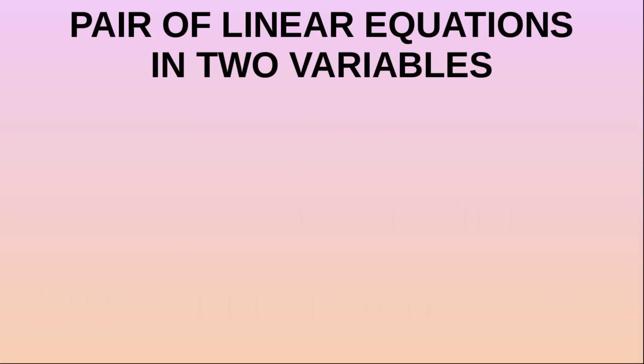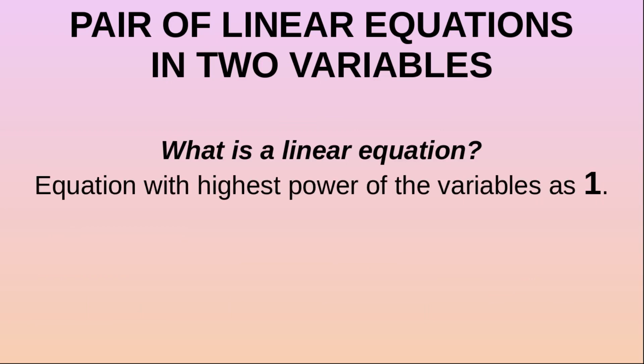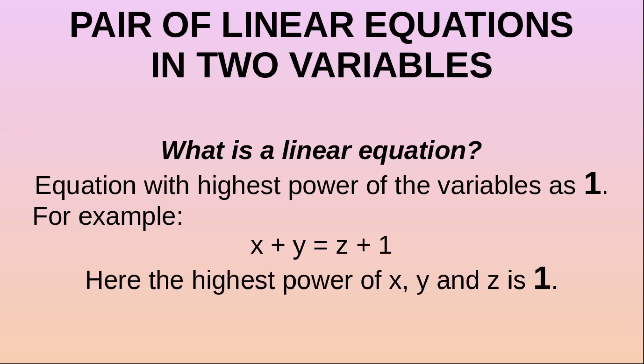The next question is: what is a linear equation? Any equation with the highest power of the variables as one is known as a linear equation. For example, x plus y is equal to z plus 1. Here, the highest power of the variables x, y, and z is 1, so x plus y equals z plus 1 is a linear equation.